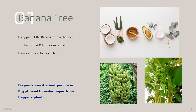Now children, the next one is banana tree. Every part of the banana tree can be used. The trunk, the fruit, and the flour can be eaten. Leaves are used to make plates. Some people use raw bananas to make chips, which is very tasty. Do you know, ancient people in Egypt used to make paper from the papyrus plant?